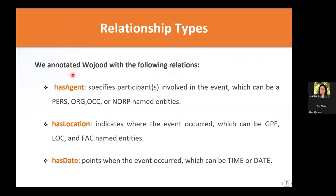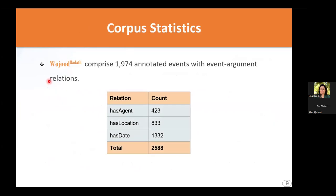The relationship types we annotated are: the has-agent relation, which specifies the participants involved in the event; the has-location relation, which indicates where the event happened. Wujud Hadath corpus consists of 1,974 annotated events with their event-argument relations. The table shows each relation's total count in the corpus, with a total of 2,588 relations.